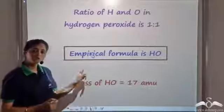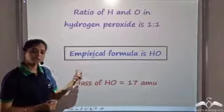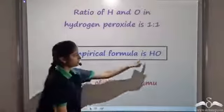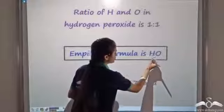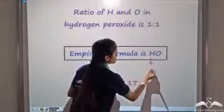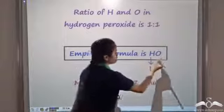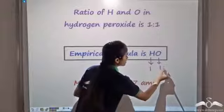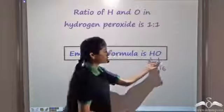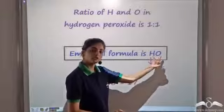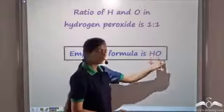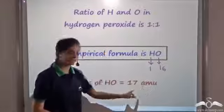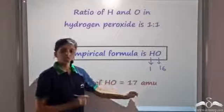Now if we calculate the empirical formula weight: for hydrogen it is 1, and for oxygen it is 16. So for hydrogen and oxygen together we get 17 atomic mass units.